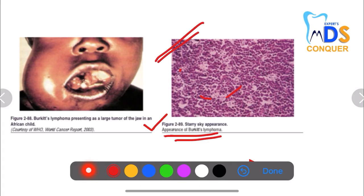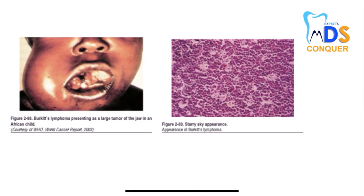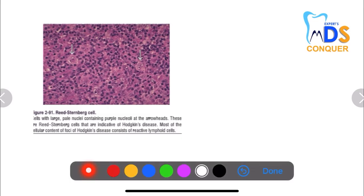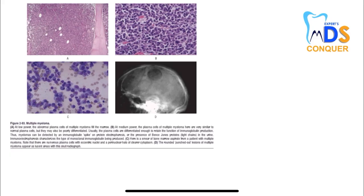Here you can see the starry sky appearance, which is a unique histological feature of Burkitt's lymphoma. Next, the Reed-Steinberg cell is a unique feature of Hodgkin's disease, where you can see cells with large pale nuclei containing purple nucleoli. This is indicative of Hodgkin's disease.